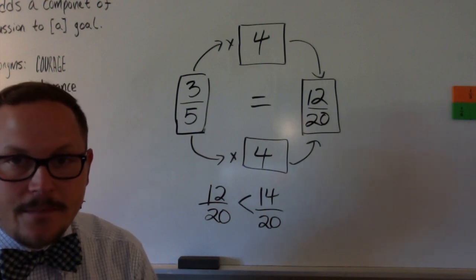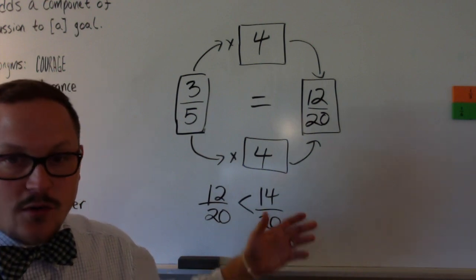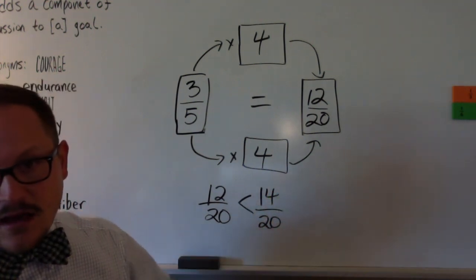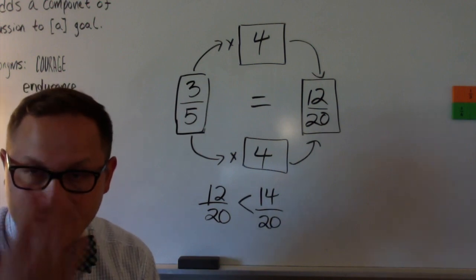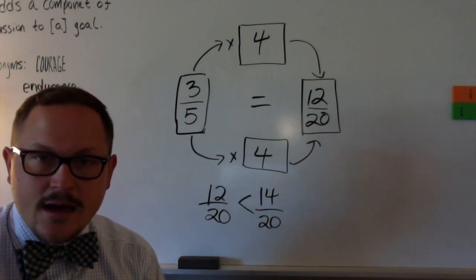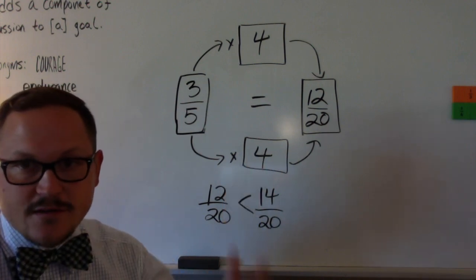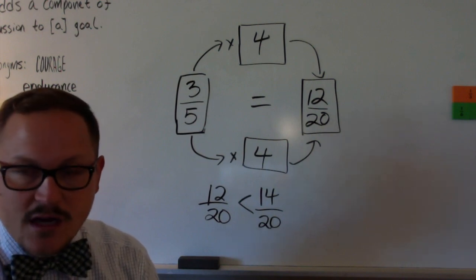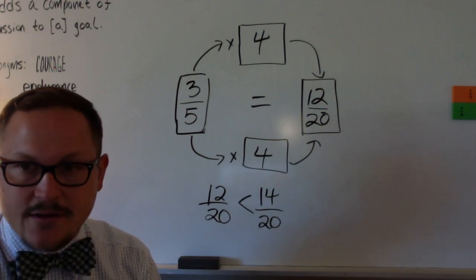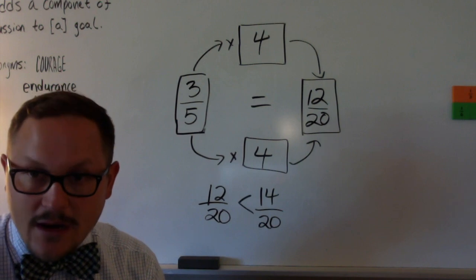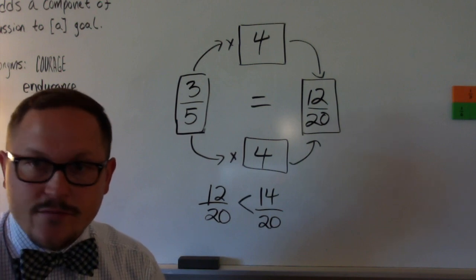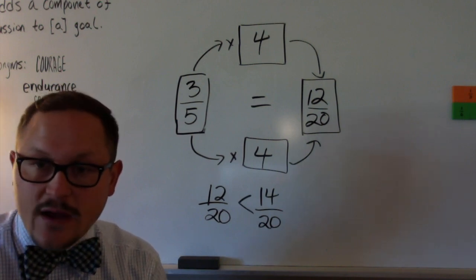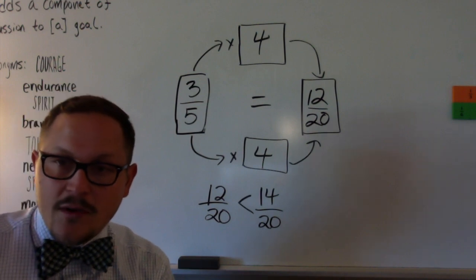It doesn't always work out that the larger numerator means a greater value, but that example happened to show it. This is a fail-safe way: renaming fractions with a common denominator will help you compare them and order them from least to greatest. You also have to do this when you subtract and when you add fractions.